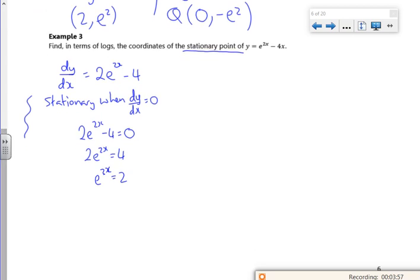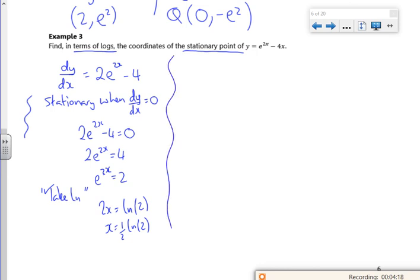So I've got e to the 2x is 2. Now it says in terms of logs, so if I get rid of e with ln, so I'll take ln. I'll have 2x is ln of 2, but I want x alone, so that is half ln of 2. Right, so that's the x value of it.